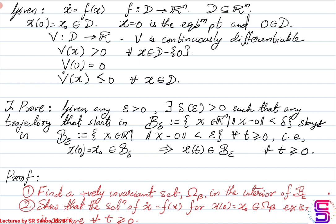What we have to prove is basically we have to establish the epsilon-delta stability for the equilibrium point x equal to 0. What we have to prove is: given any epsilon greater than 0, there will exist a delta, which is of course a function of epsilon, greater than 0, such that the trajectory that starts in the delta ball around origin will always stay inside the epsilon ball around the origin. That is, if x(0) belongs to B_delta then x(t) will belong to B_epsilon for all t greater than equal to 0.